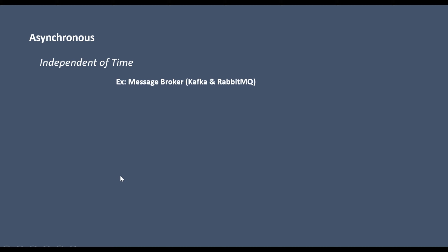Now let's understand asynchronous. Asynchronous is independent of time. I'll explain it through animations, because it's easier to memorize things through pictures rather than just theoretical words. The best example of asynchronous is a message broker. Two message brokers that are quite famous are Kafka and RabbitMQ.